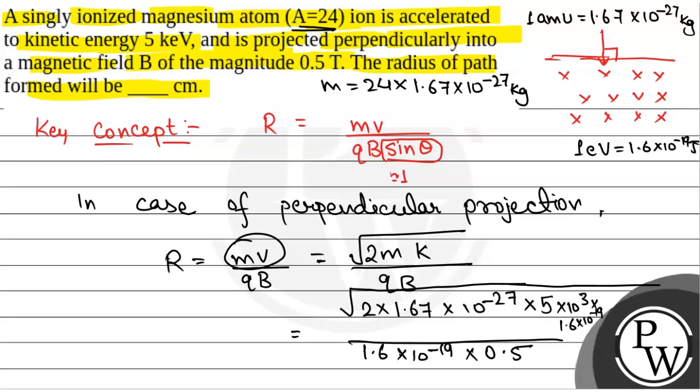So on solving this, we will get radius as 10.009 cm, which is approximately equal to 10 cm. So the final answer will be the radius of the path formed will be 10 cm. Hope you understood.